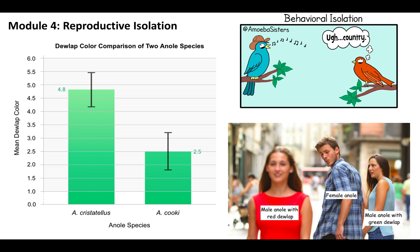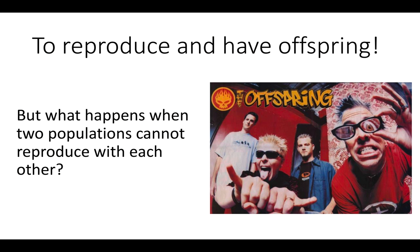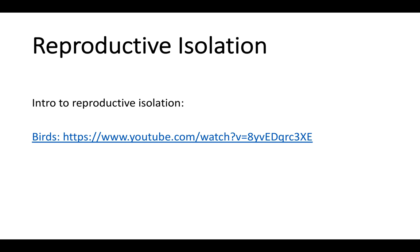This segues into the overarching question: what is the ultimate instinct of an individual, population, or species? The goal is always to reproduce and have offspring — to pass on their genes. They do that by finding food, finding a mate, having babies, and protecting those babies. So what happens when two populations can't reproduce with one another? When they're reproductively isolated, they can't interact or reproduce, and they're going to start evolving separately.